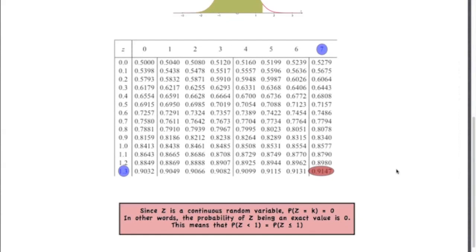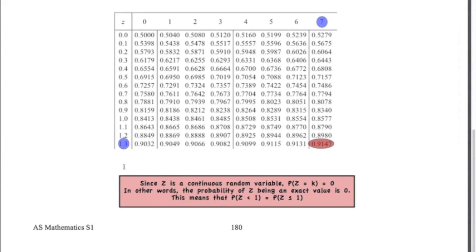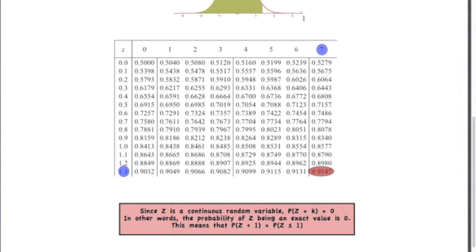It's important to note that since Z is a continuous random variable, the probability of Z being any one exact value is 0. Because theoretically there's infinitely many Z values going along here. So to ask the question like what's the probability of Z as an exact value, it's actually 0. Therefore, the probability of Z is less than 1 and the probability of Z being less than or equal to 1 are the same thing. So it doesn't matter whether we use a less than sign or a less than or equal to sign, you're just looking at the same value in the table.